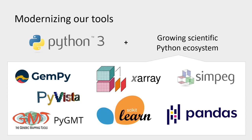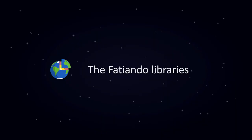In 2018, we decided that our tools needed to be modernized. We had to step away from the old Python version into Python 3. By then, the scientific Python ecosystem, and particularly the geoscientific Python ecosystem, had grown a lot. We wanted to integrate our tools with the rest of the ecosystem, so we decided to split the project into smaller libraries with narrower scope and goals.